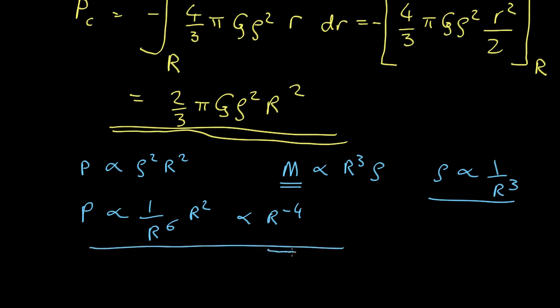So what this means is if you have a star of fixed mass, if you make it smaller the pressure in the middle goes up enormously with the fourth power. So what this is telling us is the pressure in the middle of a white dwarf must be absolutely vastly greater than the pressure in the middle of the sun.